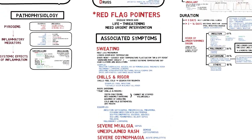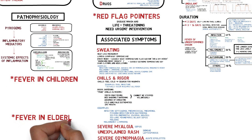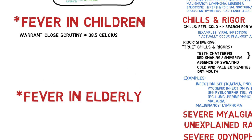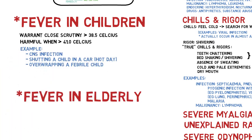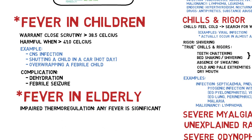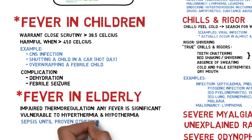We also need to know some features of fever in children and the elderly. Fever above 38.5 degrees Celsius in children warrants close scrutiny because temperature above 41 degrees is especially harmful to them, as it may cause dehydration or febrile seizure. Elderly patients have somewhat impaired thermoregulation, so any grade of fever is significant, and they are more vulnerable to hypothermia as well — it is safer to assume sepsis in elderly patients with fever until proven otherwise.